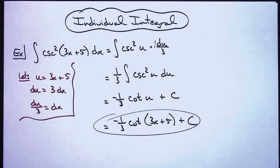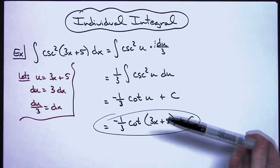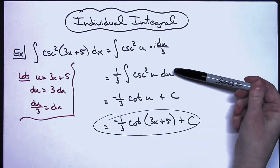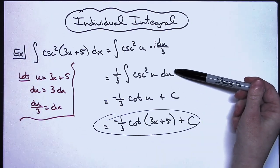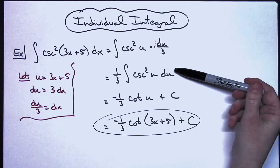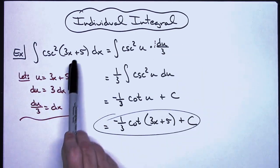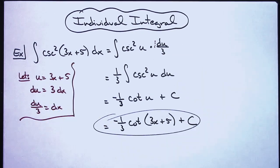A straightforward u substitution. You have to have the integral of cosecant squared u memorized, and for u substitution, pick that inside portion of the composite function.